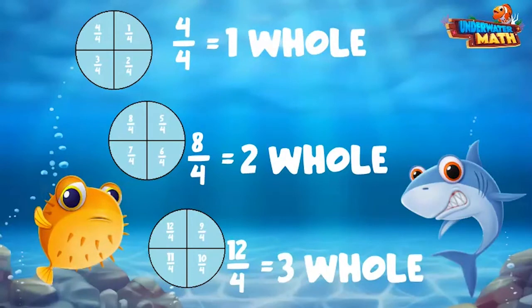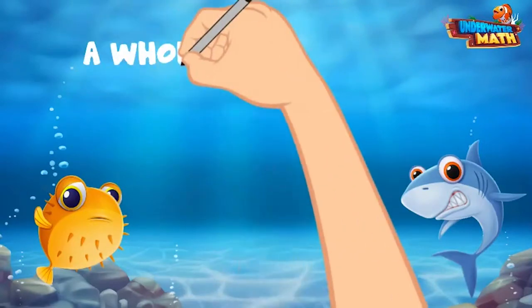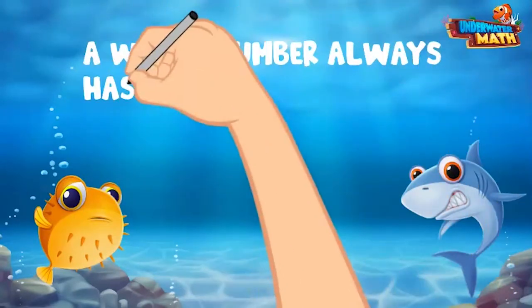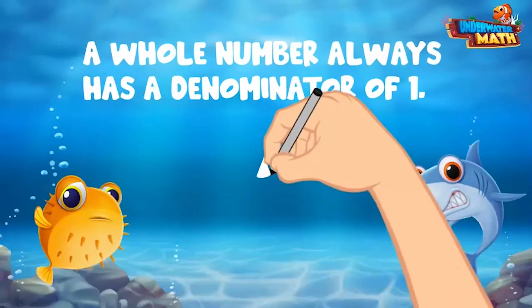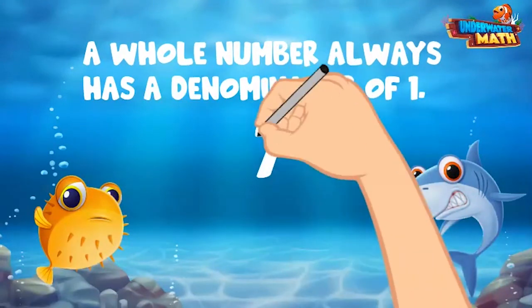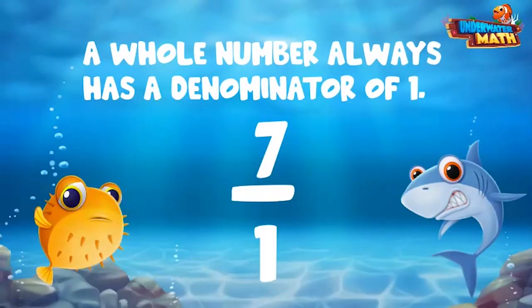Now there is one more thing to remember with whole numbers and fractions. If you have a whole number on its own, the denominator is always one. For example, the whole number seven has a denominator of one.